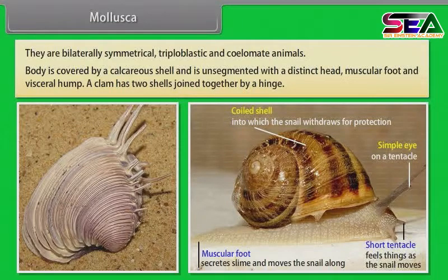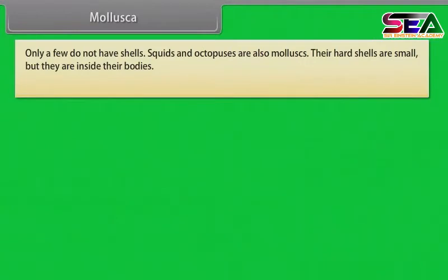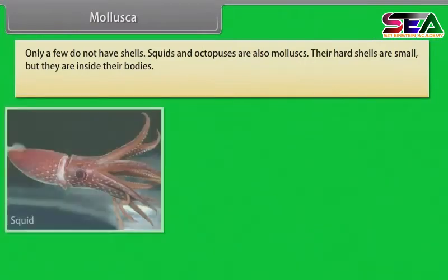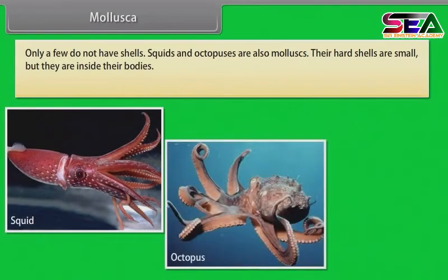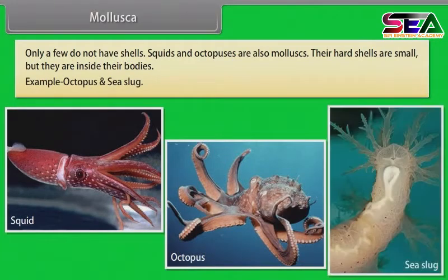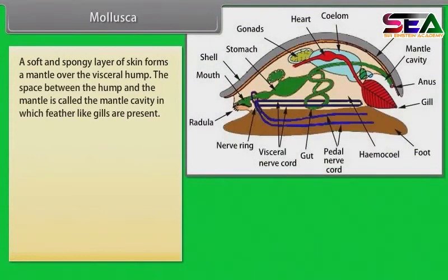The body is covered by a calcareous shell and is unsegmented, with a distinct head, muscular foot and visceral hump. A clam has two shells joined together by a hinge. Only a few molluscs do not have shells — squids and octopuses are also molluscs; their shells are small but located inside their bodies.